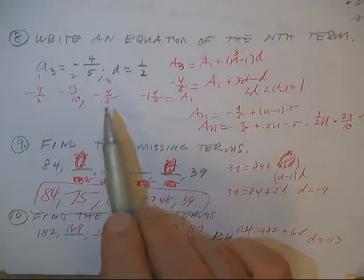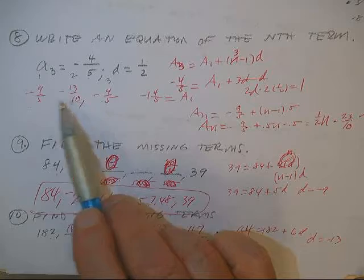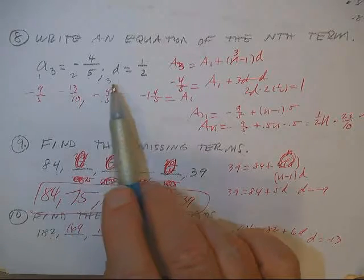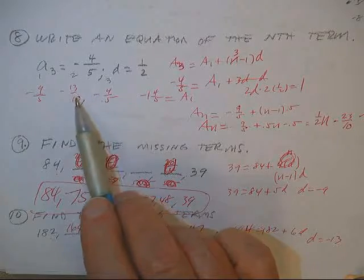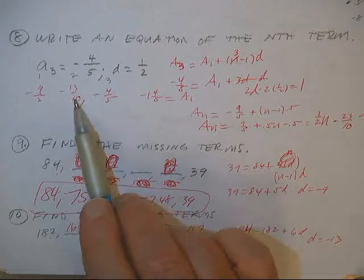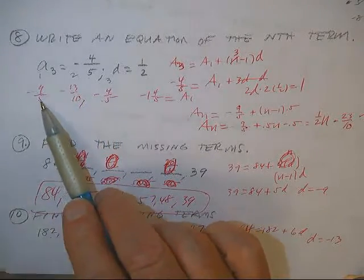Okay, very good. On this one, I just backed up to find the first term. The common difference is a half, so every time a half was being added. Here I subtracted a half from that, subtracted a half from that, subtracted a half from that.